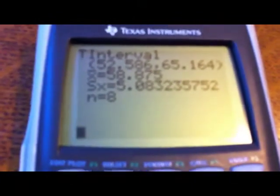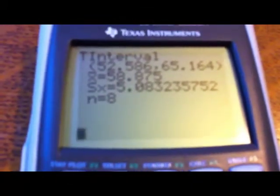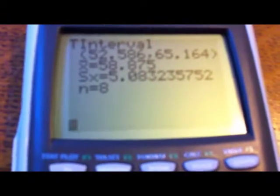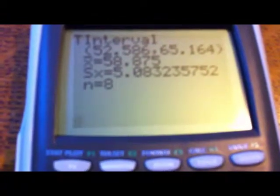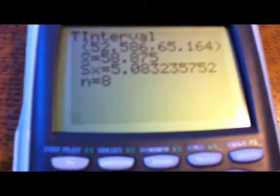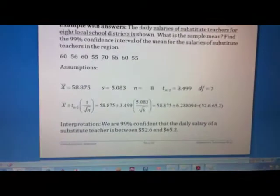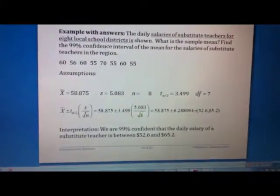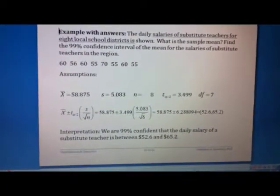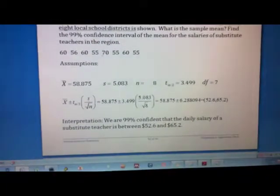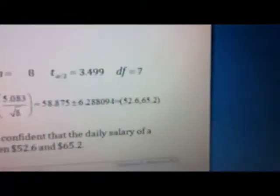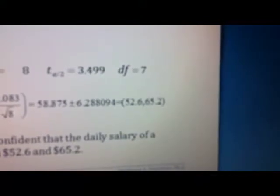And let's do some checks. So X bar 58.875, our standard deviation is 5.083. And you'll notice that that's what you should have gotten when you were doing this by hand or by calculator, but you were calculating the statistics yourself. And notice what your confidence interval is. So 52.6 to 65.2.